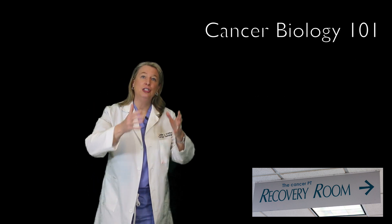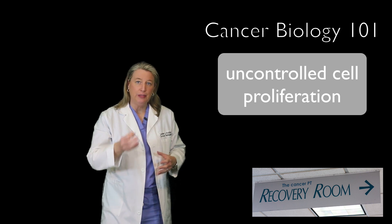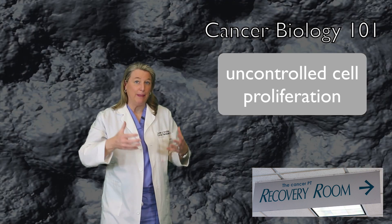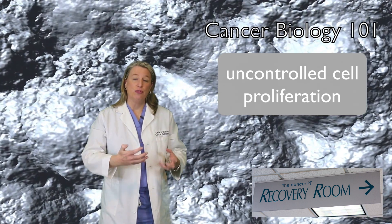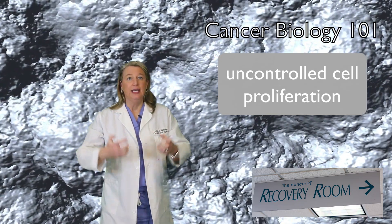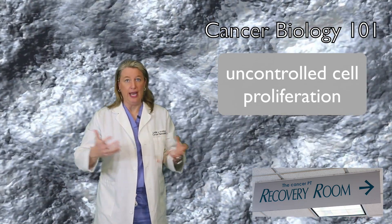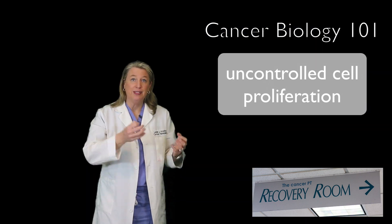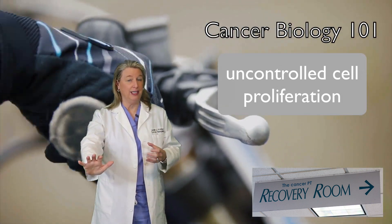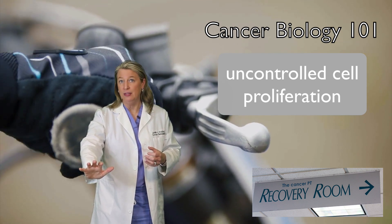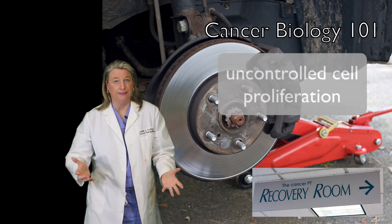First, uncontrolled cell proliferation. Proliferation means a rapid increase in numbers. In cancer cells, this rapid continual dividing is sometimes due to the cell's growth signals going haywire, sometimes from the cell's growth factors getting their foot permanently stuck on the accelerator, or the brakes on cell growth completely stop working.